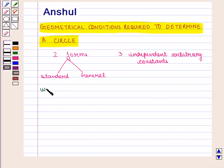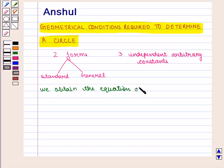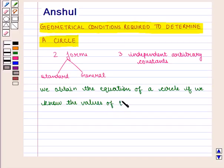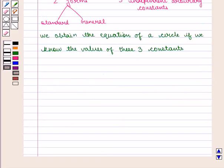We obtain the equation of a circle if we know the values of these three constants. As there are three variables, we need three equations or conditions about the circle to find the values of these constants. Let us discuss a few geometrical conditions.